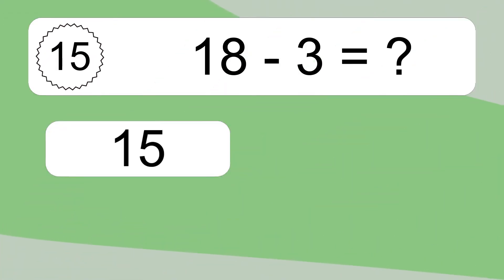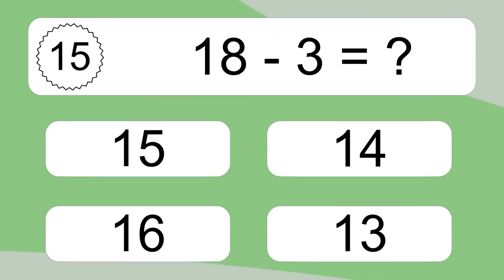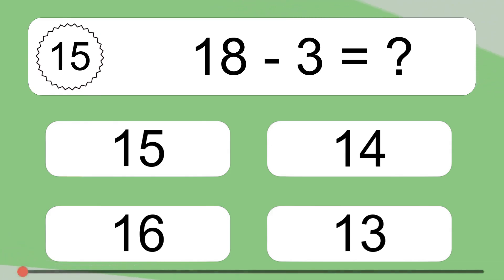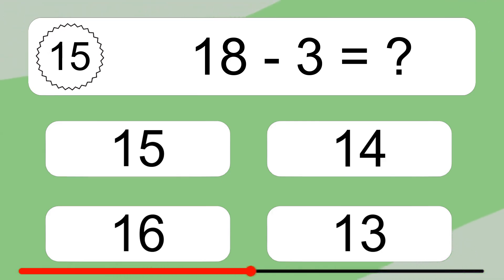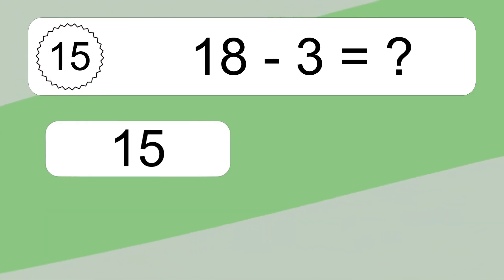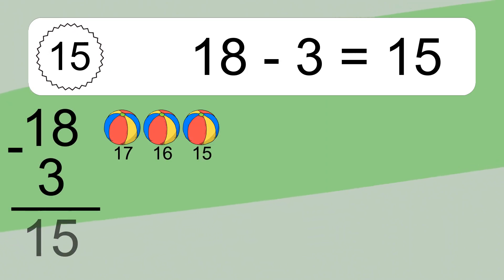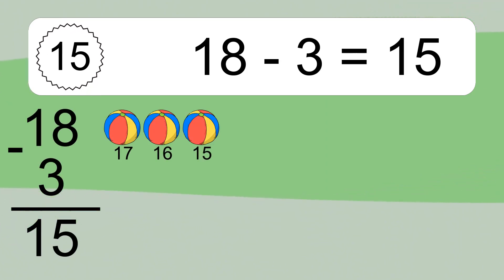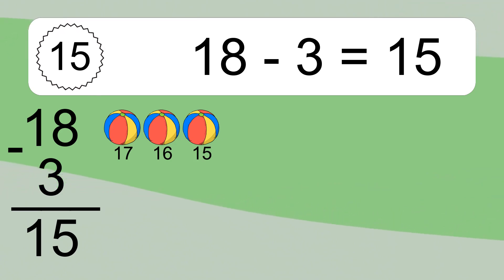18 minus 3 equals what? 18 minus 3 equals 15. Let's count it. 17, 16, 15.